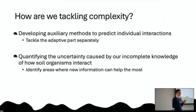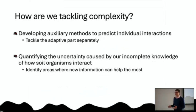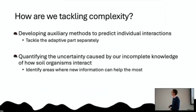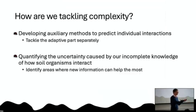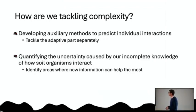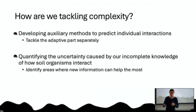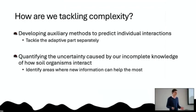Today I want to talk about two specific challenges we deal with in this data-limited system. The first is developing auxiliary methods to predict how individual organisms' diets are going to shift — taking the adaptive part of the complex systems idea and handling it separately to manage the complexity. The second is using computational techniques to quantify the uncertainty within this network and demonstrate what we don't know about what we think this system might be capable of.